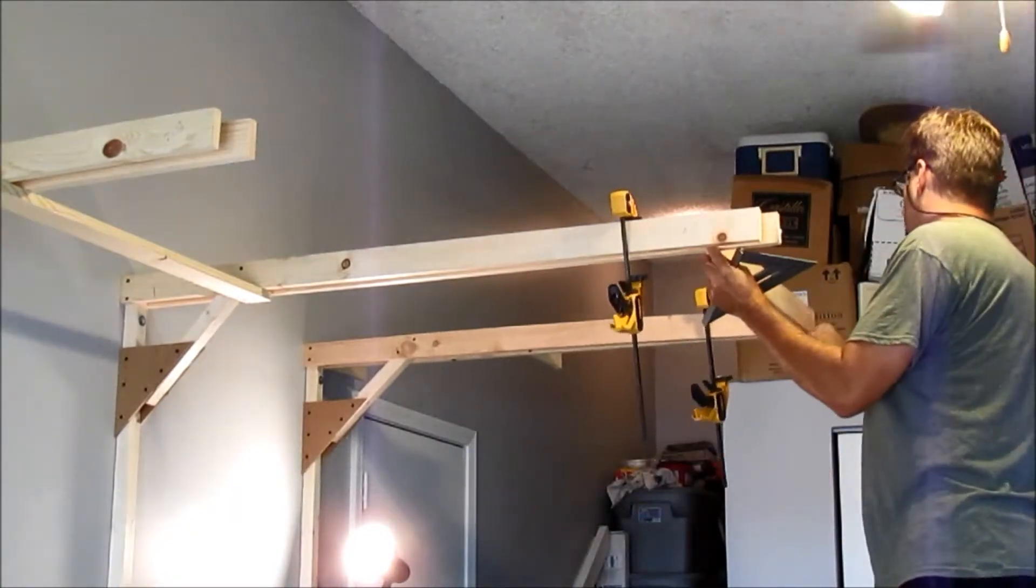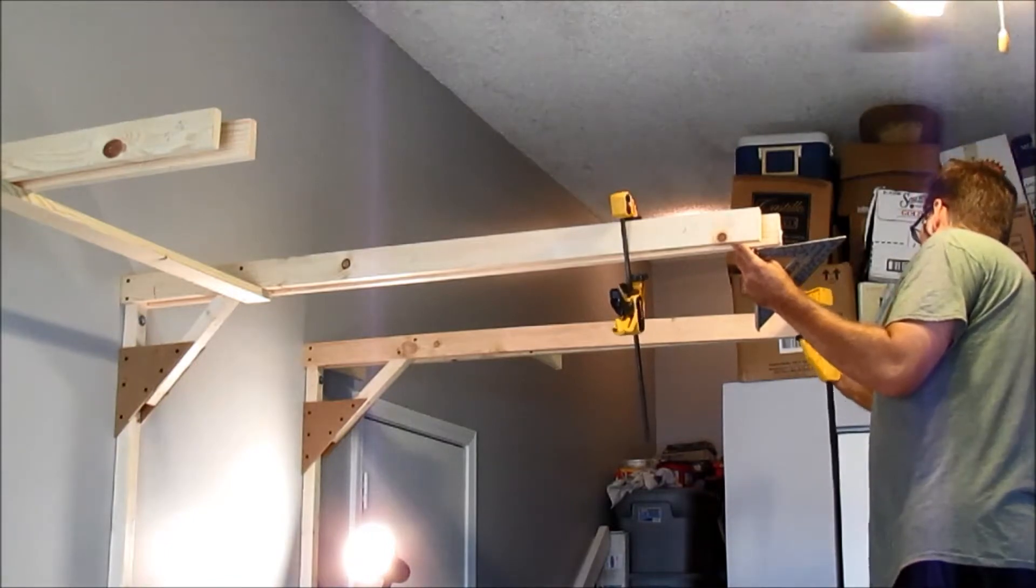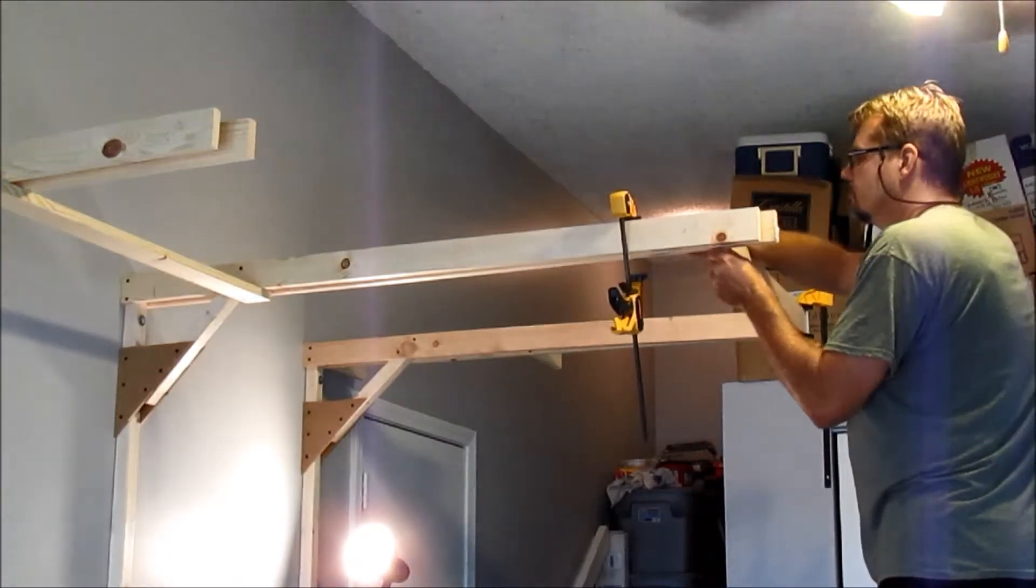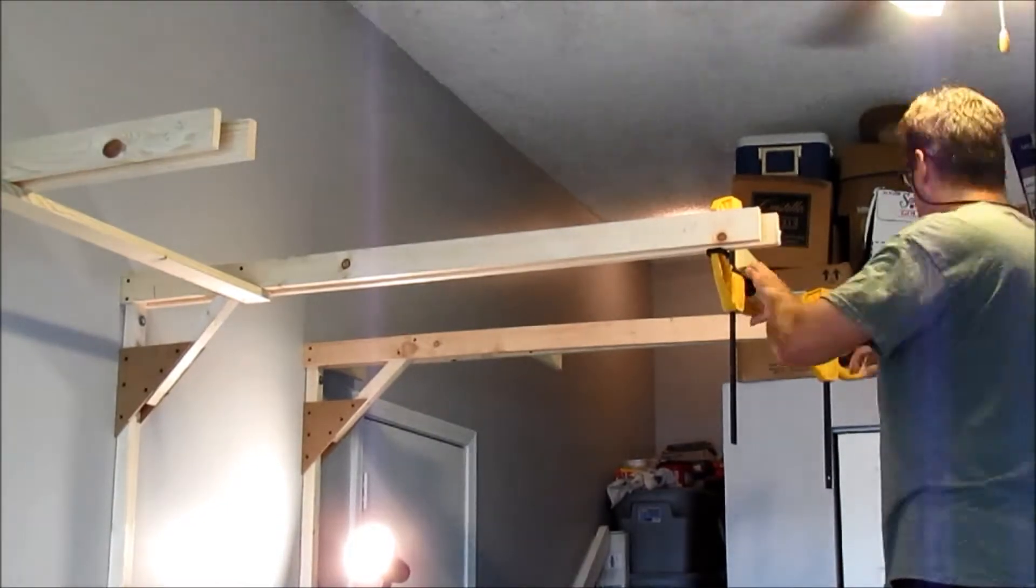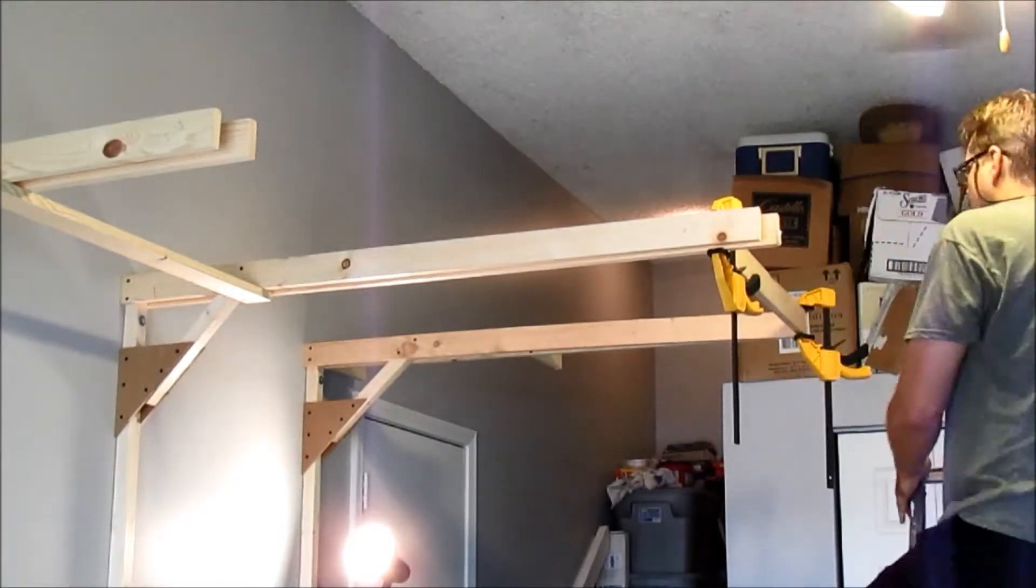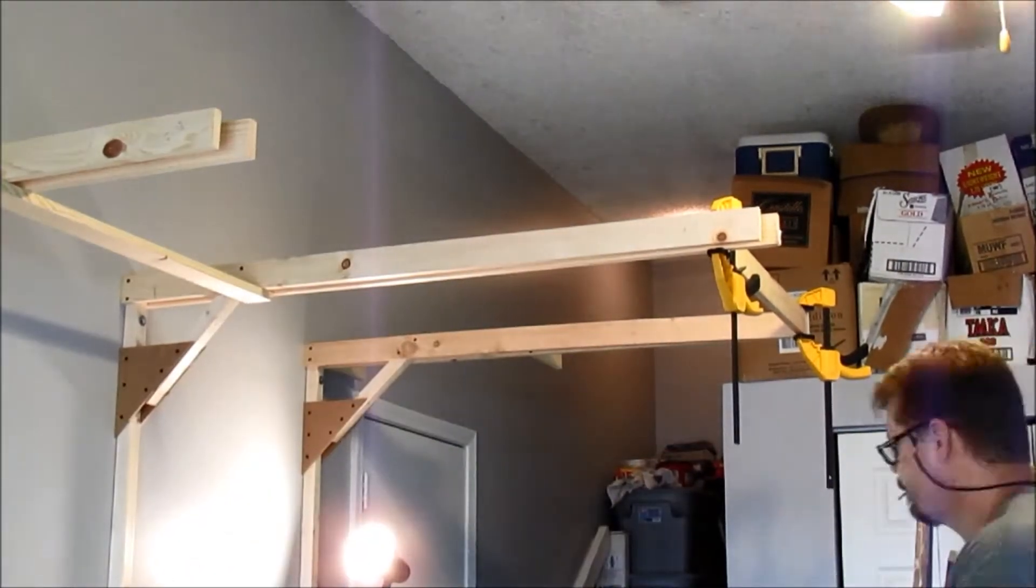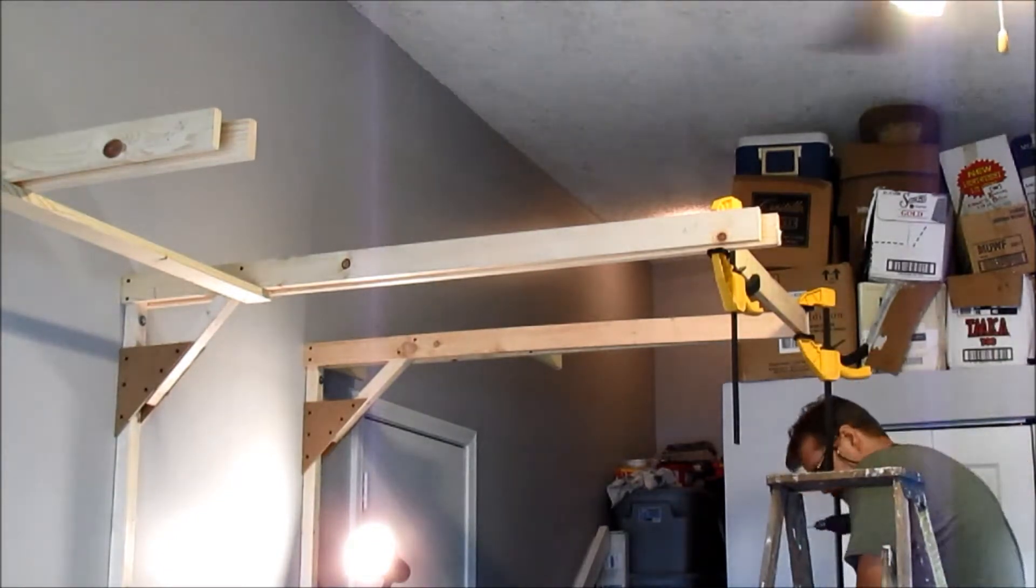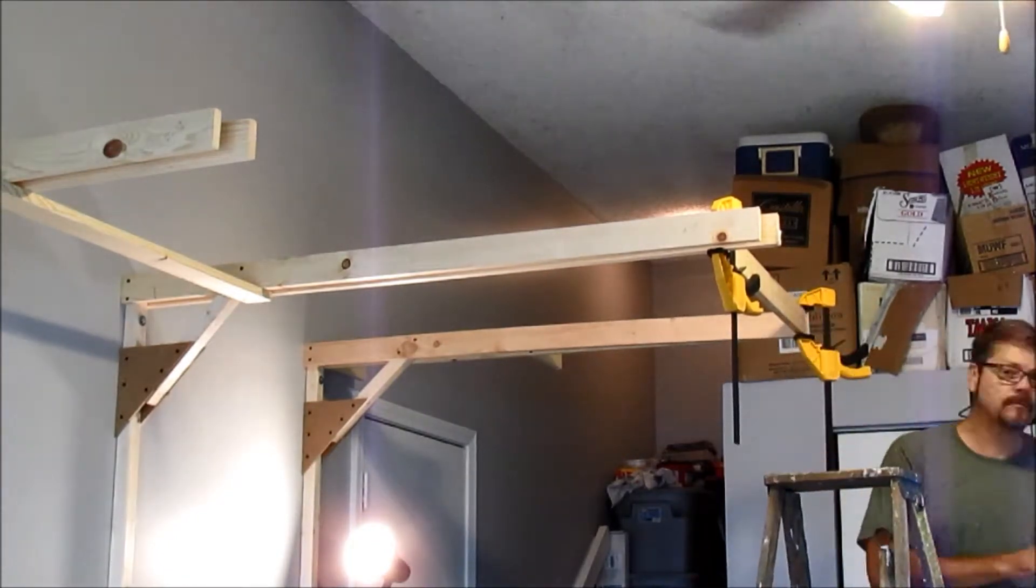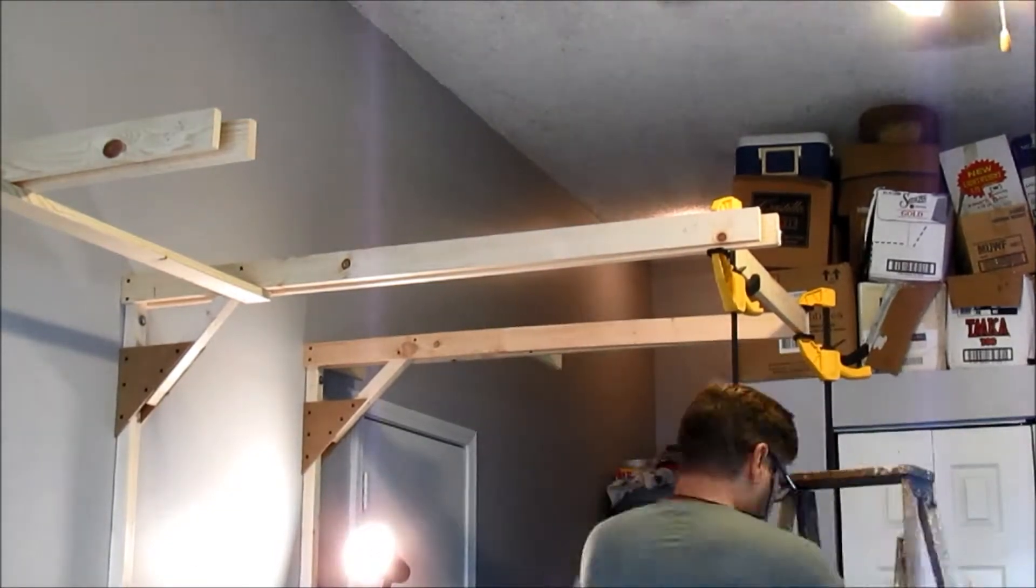So here I'm actually attaching a stringer to the end of the twin bracket arms. Now those twin bracket arms are about 5 feet long and a little bit on the flimsy side, so I needed to install a stringer here to help stabilize. Also the stringer needed to be installed as a way for me to cut smaller 1x3s and have those attached to the stringer so that I'll have something to attach my valence to.